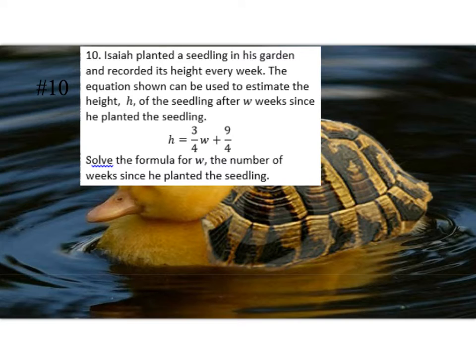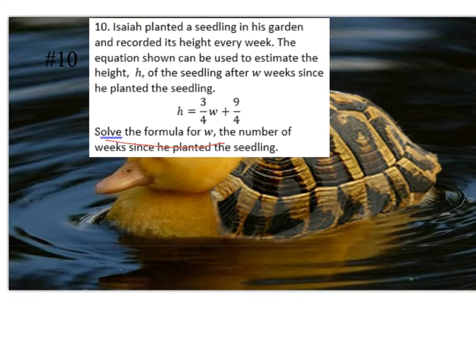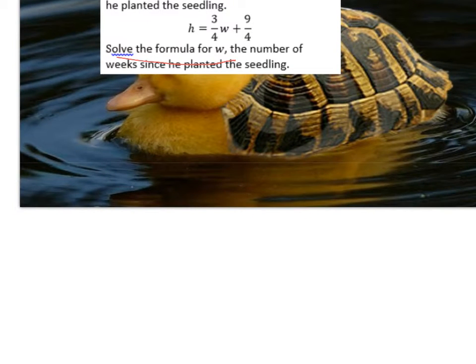All right, we're getting more difficult. For this one, you have all this story about planting, but just focus on: solve the formula for w. That's all we need to know. It's just a literal equation - solve the formula for w, which means we want w by itself. I'm not even going to look at the rest of that word problem. So we have h equals three-fourths w plus nine-fourths. We got some fractions. I think I want to take those fractions out. Let's get rid of them.